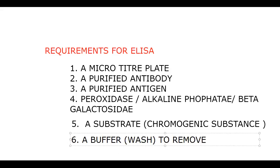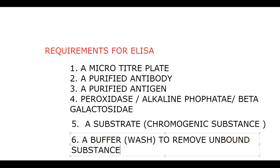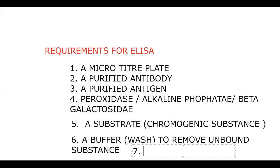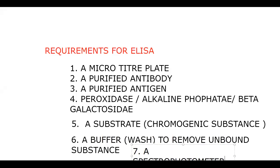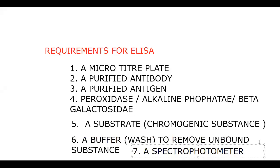Finally, a spectrophotometer is required. The color change is the major characteristic feature of ELISA. To identify the intensity of the color, we need to use a spectrophotometer. So these are the requirements: microtiter plate, purified antibody or antigen, enzymes (peroxidase, alkaline phosphatase, or beta-galactosidase), a chromogenic substrate, a buffer to remove unbound substances, and a spectrophotometer.